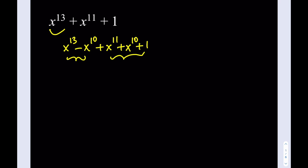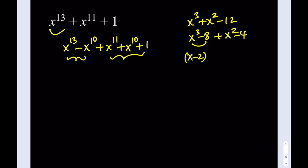Isn't that cool? I can give you a good example. Suppose you had the following problem: x cubed plus x squared minus 12. This might look like an unusual polynomial, but it's easy to factor. I can write this as x cubed minus 8 plus x squared minus 4. Now obviously this is factorable and contains x minus 2, and this is factorable and contains x minus 2. So they have a common factor, which is what I'm looking for. But this one is still big, so I'm going to keep breaking it down until I get something nicer.